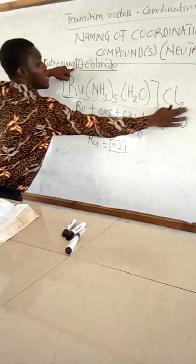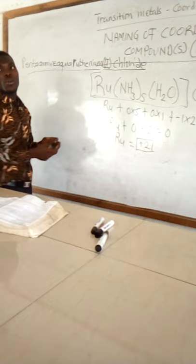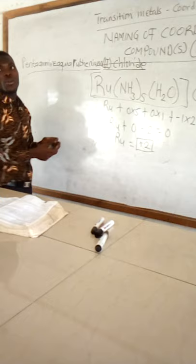Then after the bracket, the element is chlorine. Now you add chloride. Is that okay? That is how we name a neutral coordination compound.